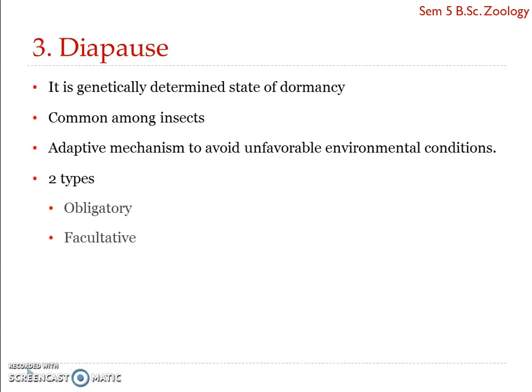Obligatory diapause is common in those species which have only one generation per year. When diapause is obligatory, environmental factors affect only the duration of the diapause and never its onset.